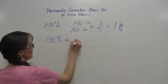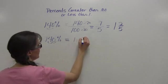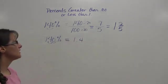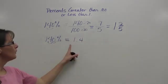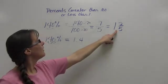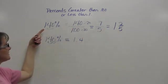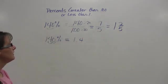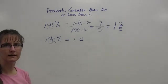That means that your answer is going to be 1.4. That's one and four-tenths. One and four-tenths is the same thing as one and two-fifths. And one and two-fifths is the same thing as 140%. These numbers all mean the same thing.